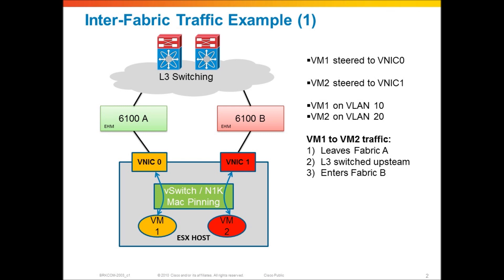These two VMs are on different VLANs - VM1 is on VLAN 10 and VM2 is on VLAN 20. For these two VMs to communicate, they're going to need to perform Layer 3 switching, and since the fabric interconnect itself is not a Layer 3 switch, that flow needs to move upstream to the Layer 3 network to be Layer 3 switched and come back down. So VM1 egresses out of vNIC0 through Fabric A up to the Layer 3 switch - could be a Nexus 7000 - and the Nexus 7000 sends that flow down to Fabric B to come in on vNIC1 on the very same server, received on VLAN 20 for VM2. This is inter-fabric traffic for Layer 3 switching between two VMs.